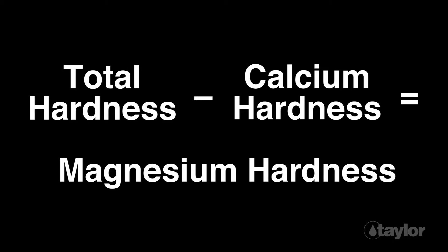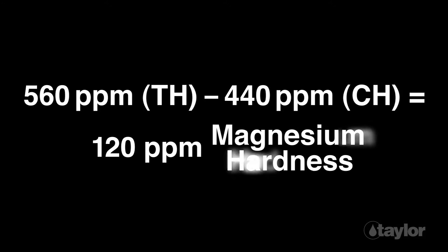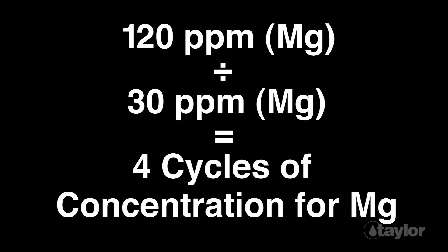With a total hardness level of 140 parts per million and a calcium level of 110 parts per million, the magnesium hardness is 30 parts per million. For discussion purposes, let's assume we tested a cooling water and found a total hardness level of 560 parts per million and a calcium level of 440 parts per million — in this example the magnesium hardness would be 120 parts per million. The magnesium hardness is useful to know, as at neutral pH levels it is more soluble than calcium. For most open cooling water systems, the value found by dividing the cooling water magnesium level by the makeup water magnesium level often approximates the number of cycles of concentration in the system.